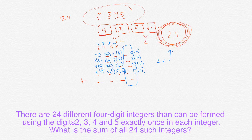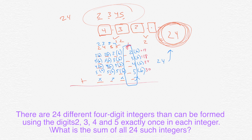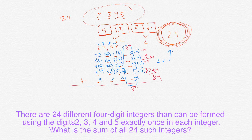So the first column here is the ones, that's the tens, that's the hundreds, and that's the thousands. Now it's literally as if we were just adding them all up. In the ones column: two times six is 12, three times six is 18, four times six is 24, five times six is 30. So in the ones column you're going to get 12 plus 18 plus 24 plus 30. 12 plus 18 is 30, 24 and 30 is 54, and 30 plus 54 is 84. So in the ones column you're going to get 84.